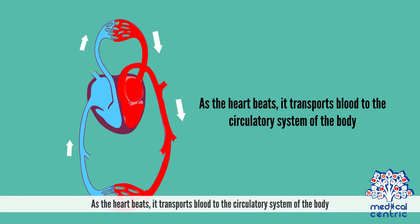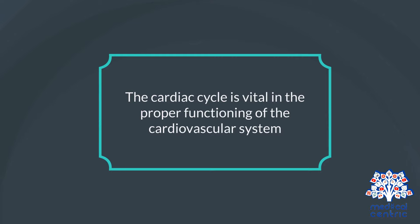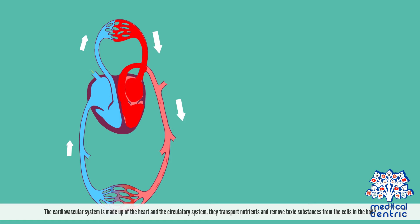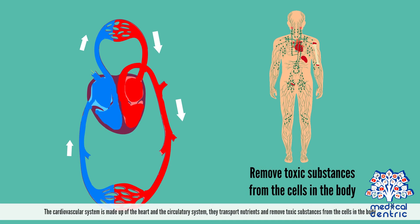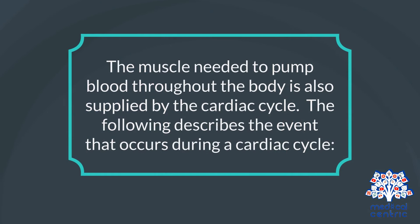As the heart beats, it transports blood to the circulatory system of the body. The cardiac cycle is vital in the proper functioning of the cardiovascular system, which is made up of the heart and the circulatory system. They transport nutrients and remove toxic substances from the cells in the body. The muscle needed to pump blood throughout the body is also supplied by the cardiac cycle.